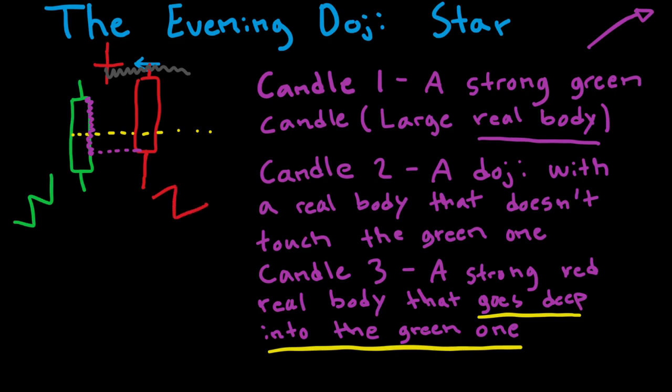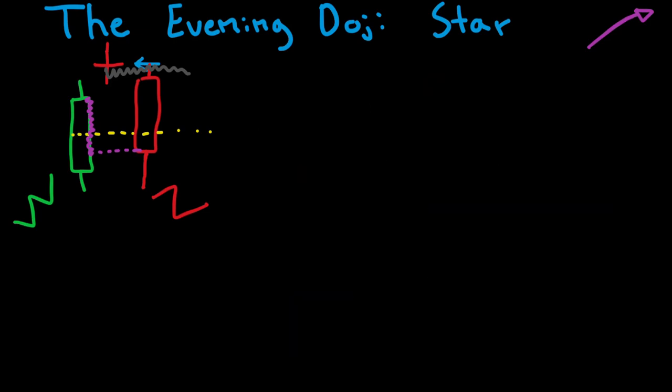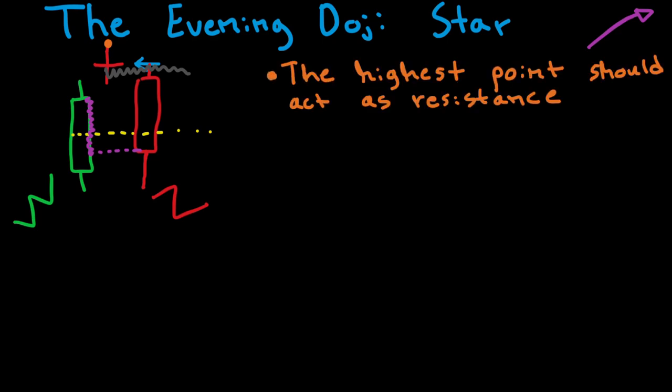Another thing that I think is worth mentioning here is that the highest point of the pattern, so in this case the highest point is up here, the highest point should act as resistance. So if we draw a line from the highest point here, so this orange dotted line right here, should in the future become some sort of resistance. And this resistance can be stronger or weaker depending on many factors, for example, if it has acted as resistance prior to this pattern. Another factor is if we saw lots of volume, lots of sellers at this level, and there are other factors that make the resistance more strong or more weak that I'm not going to go into a lot in this video.